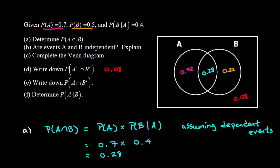Part E asks for the probability of A and not B. We need to be in A — so either the A-only or intersection region — but we also must not be in B, eliminating the intersection. The double-check mark lands on the A-only section with the 0.42. So we have to be in A and sidestep the 0.28 intersection which belongs to B as well. The answer for part E is 0.42.